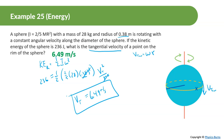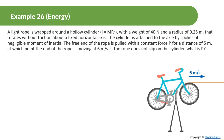Moving on. A light rope is wrapped around a hollow cylinder — like a bike wheel — which has a moment of inertia of mr squared. The wheel weighs 40 newtons and has a radius of 0.25 meters, rotating without friction about a fixed horizontal axis. The free end of the rope is pulled with a constant force P for a distance of five meters, at which point the rope end is moving at 6 meters per second. What is P?